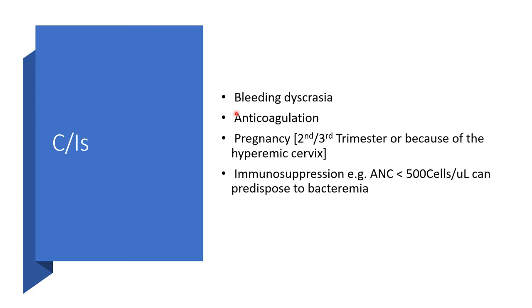Contraindications include bleeding dyscrasia, anticoagulation, and pregnancy in the second or third trimester due to the upper cervix. Immunosuppression — specifically an absolute neutrophil count of less than 500 cells per microlitre — can predispose to bacteria.